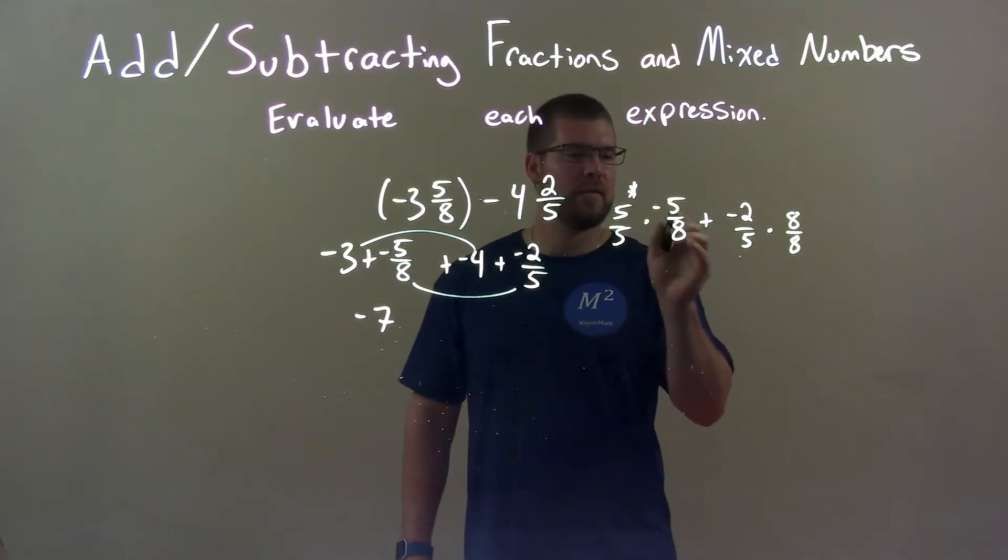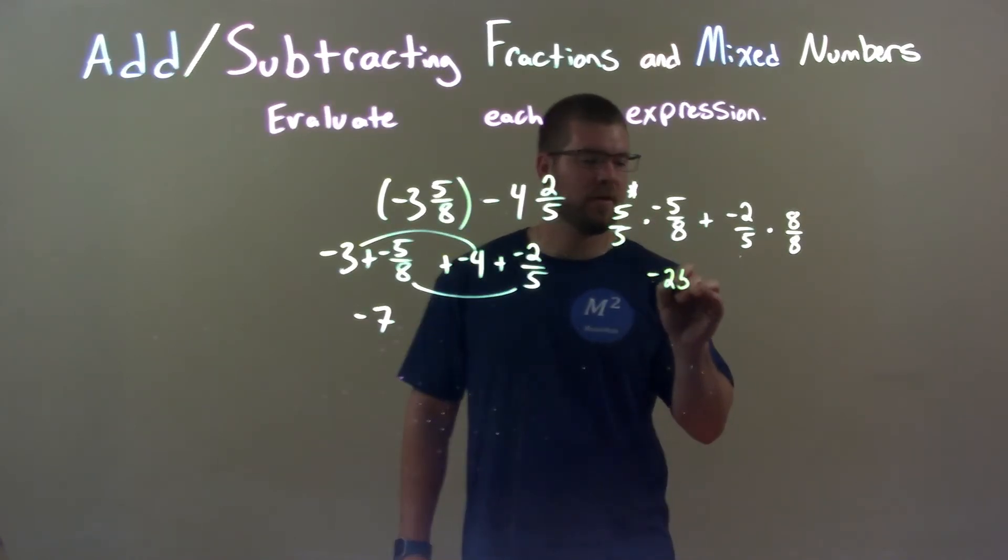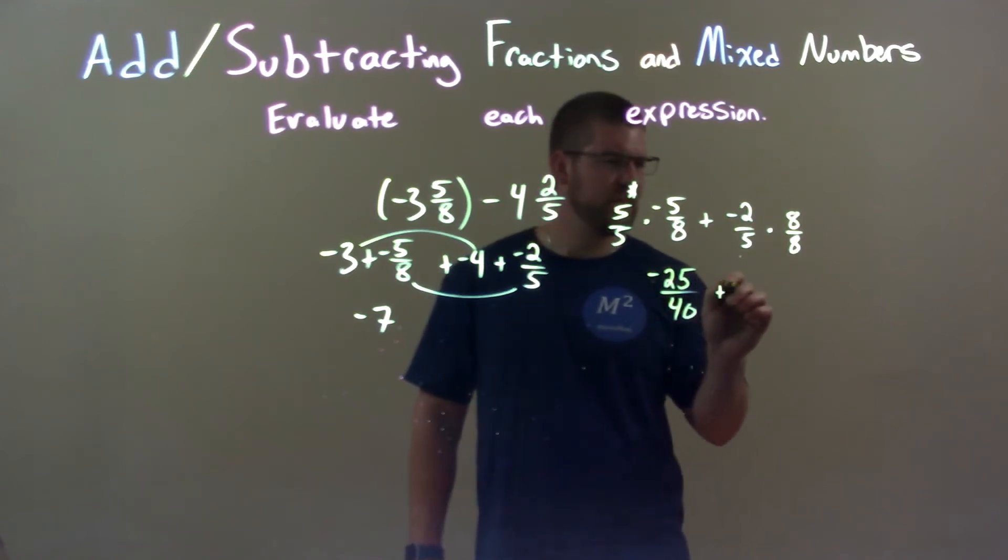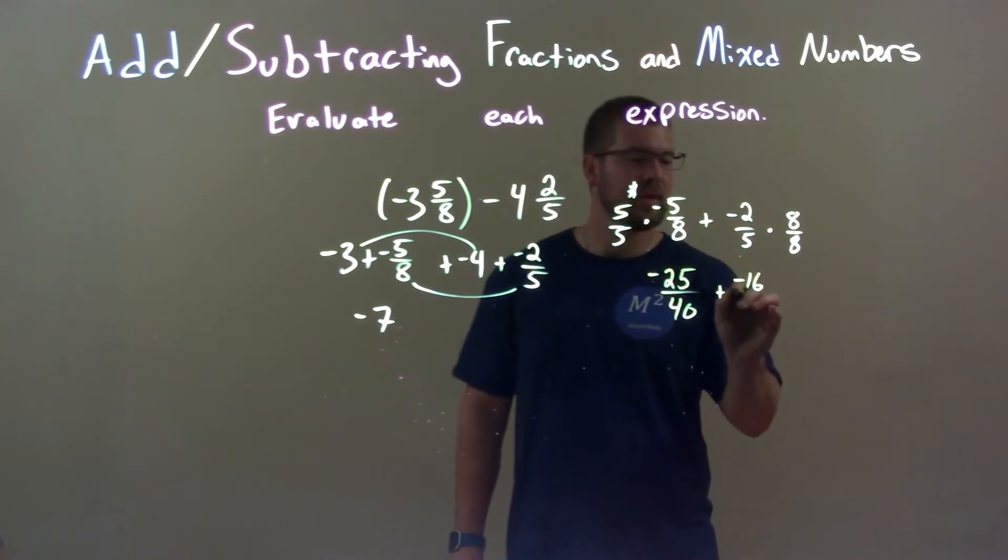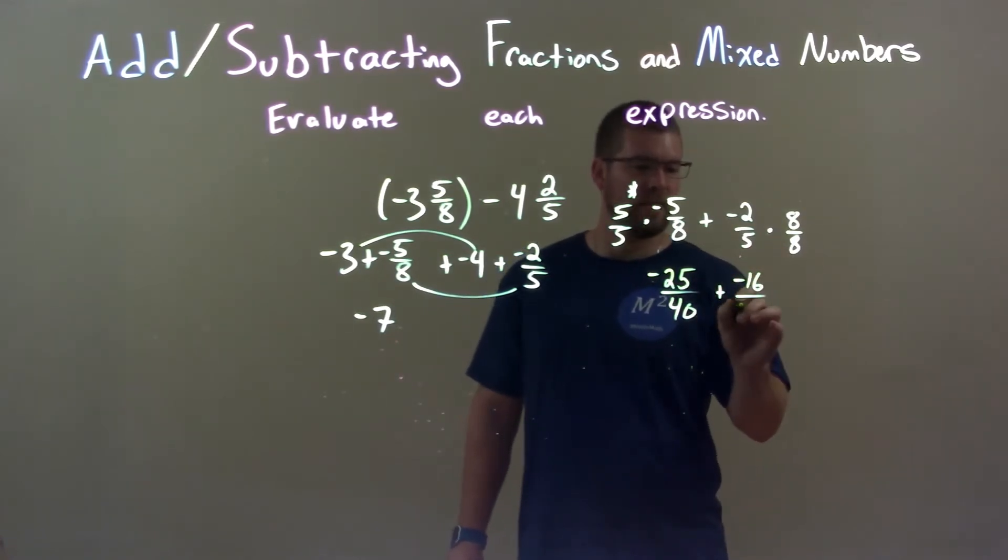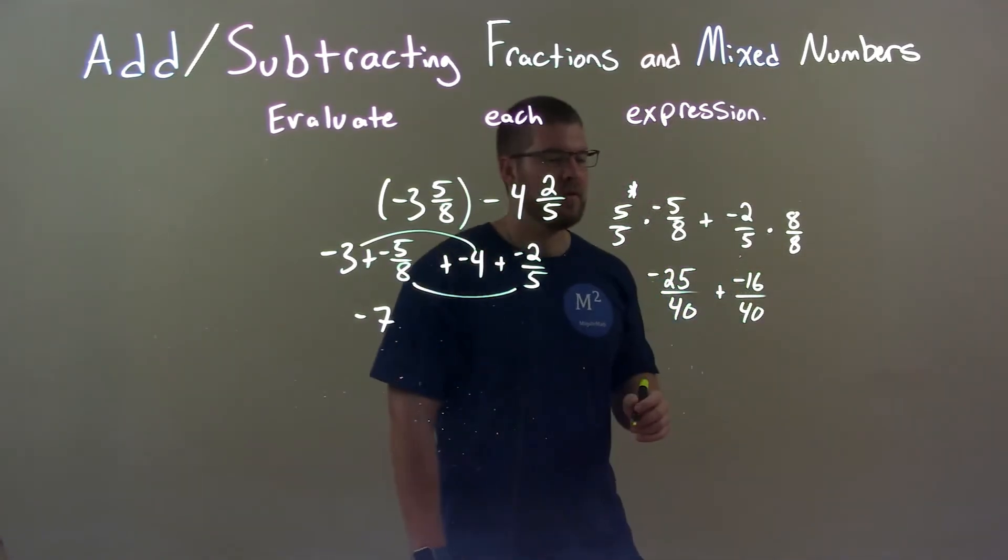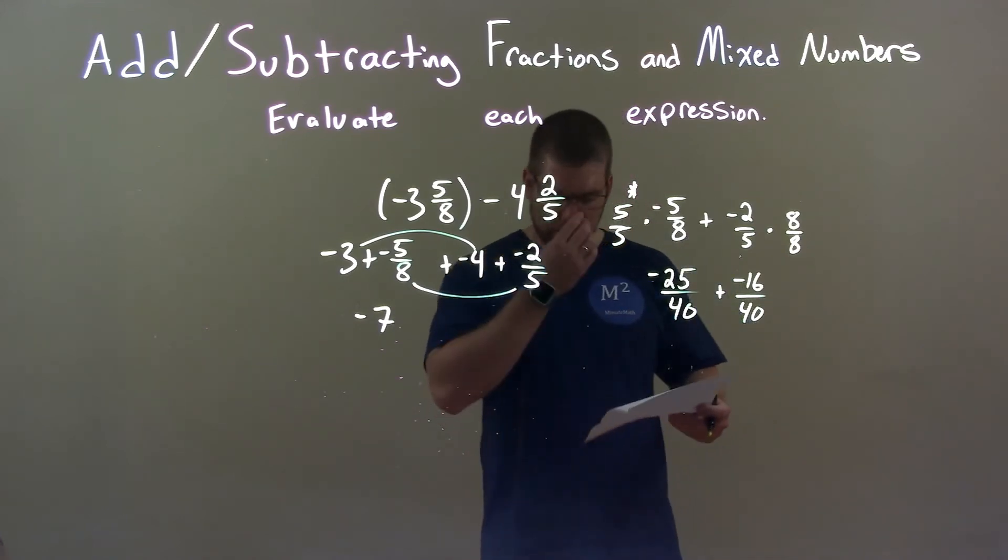All right, multiplying them across: 5 times negative 5 is negative 25, and 5 times 8 is 40. Then negative 2 times 8 is negative 16, and 5 times 8 is 40 again. So now we have the same base. We just add the numerators here.